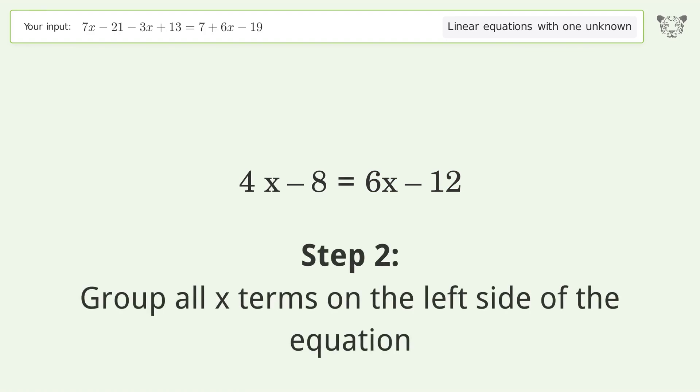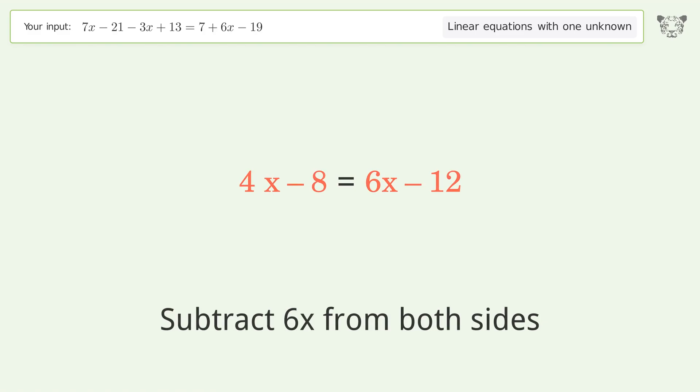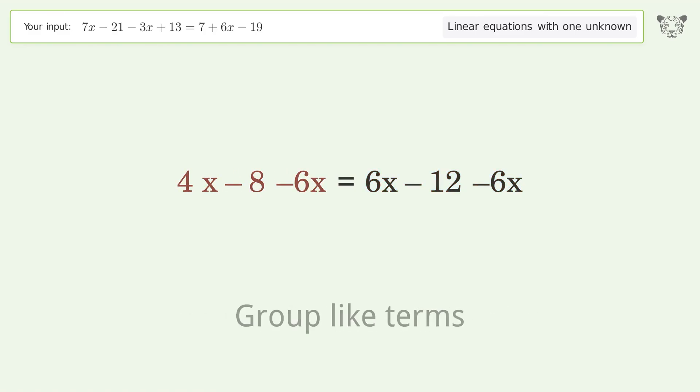Group all x terms on the left side of the equation. Subtract 6x from both sides. Group like terms. Simplify the arithmetic.